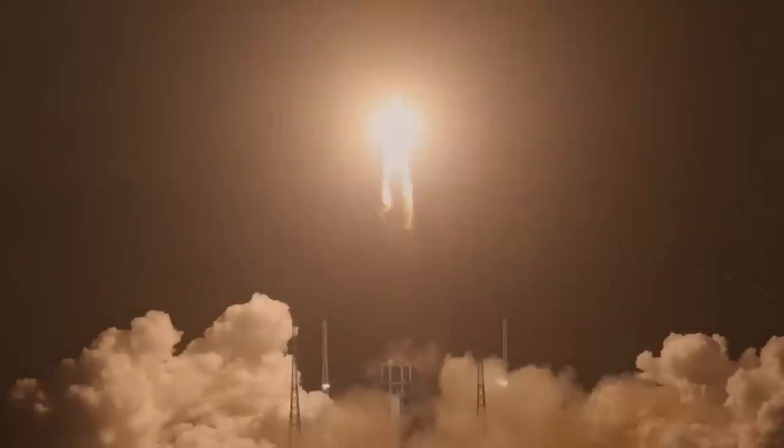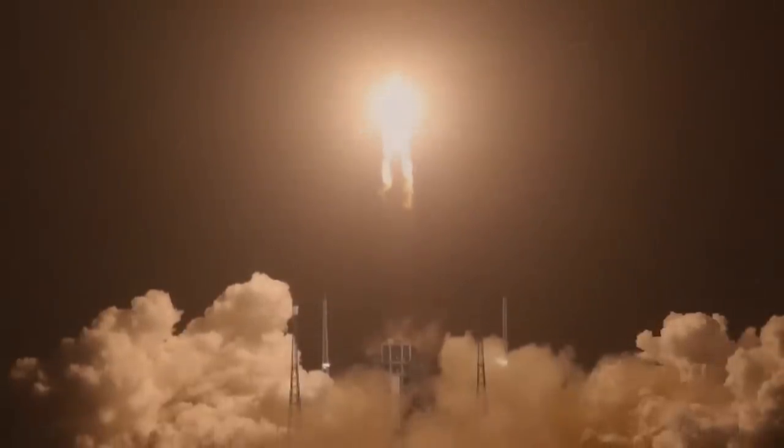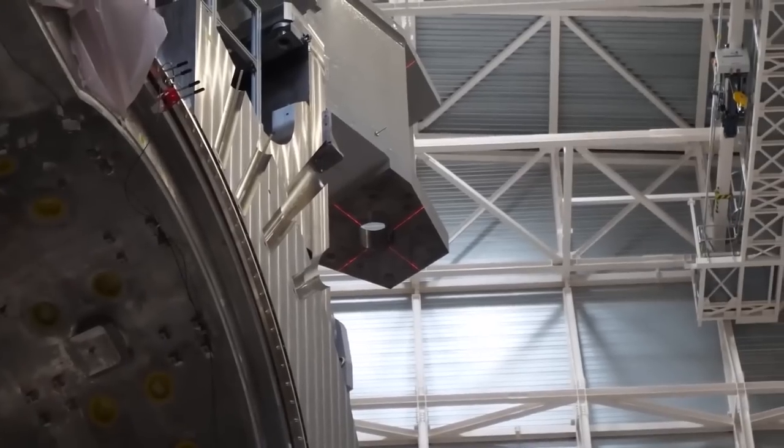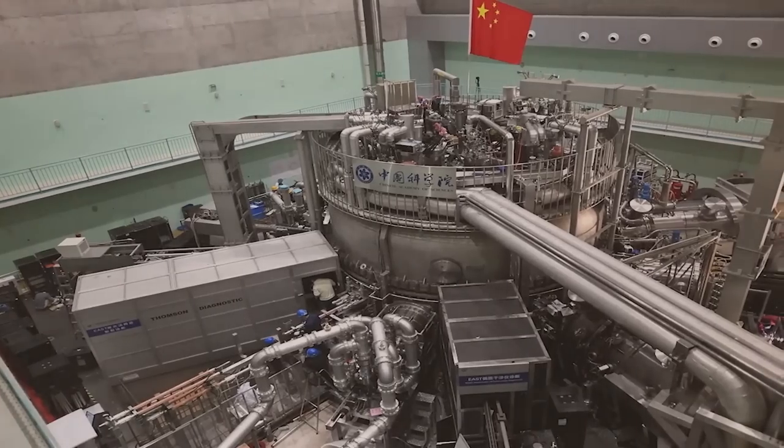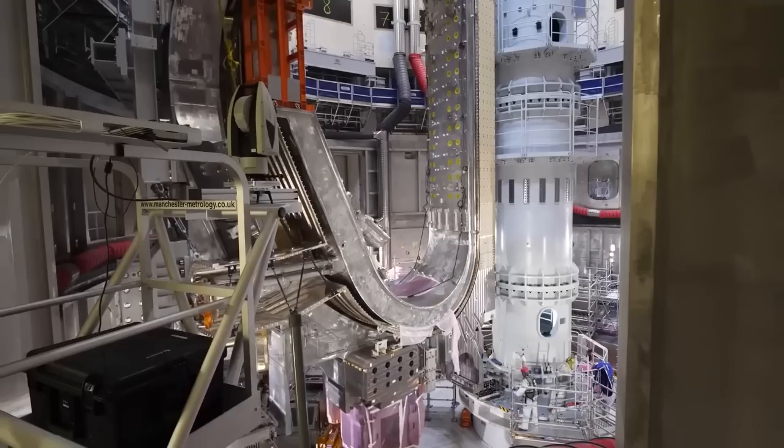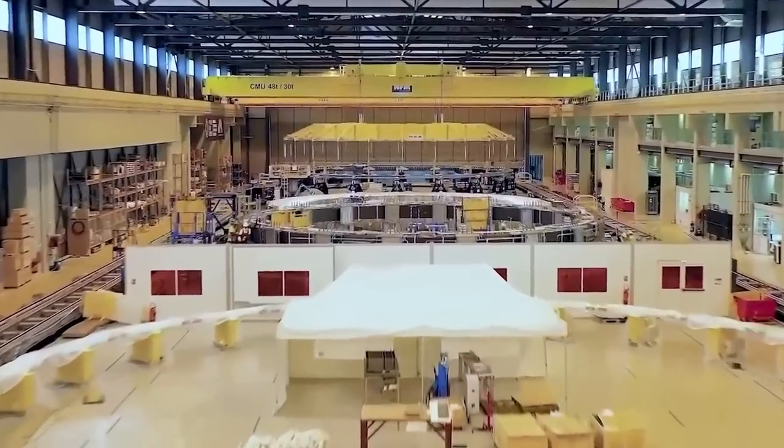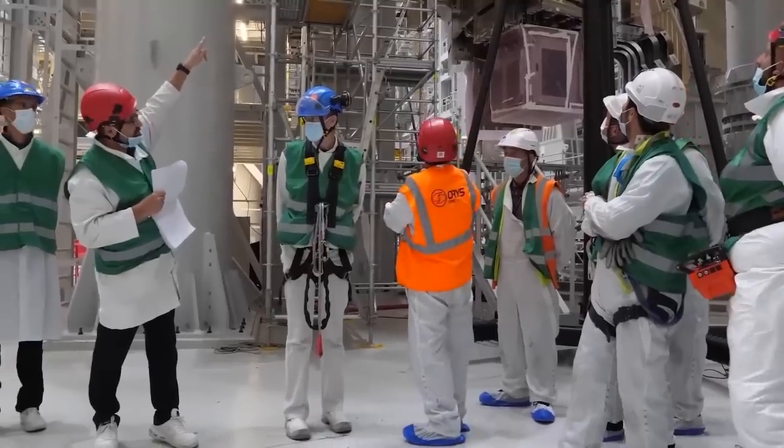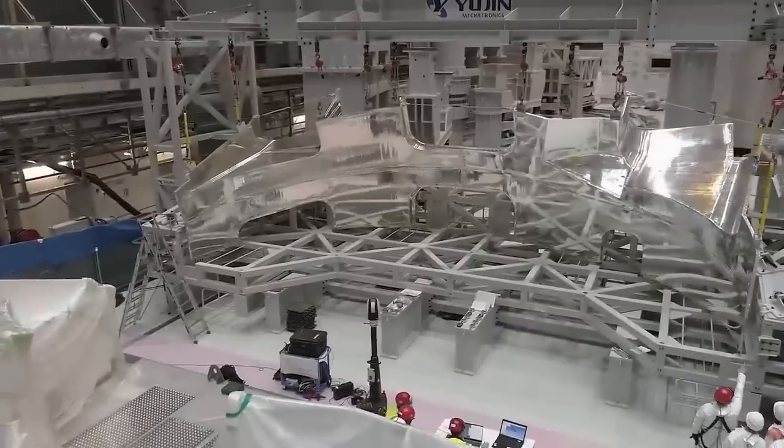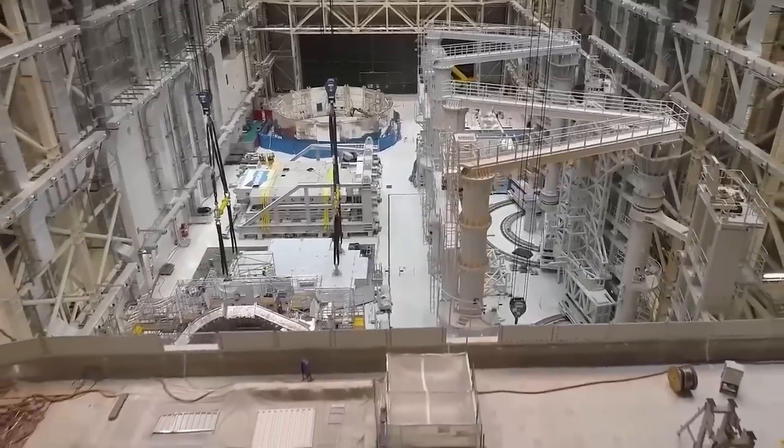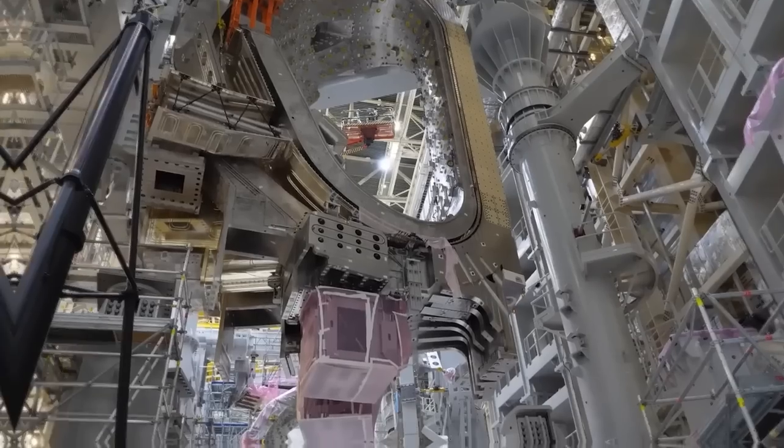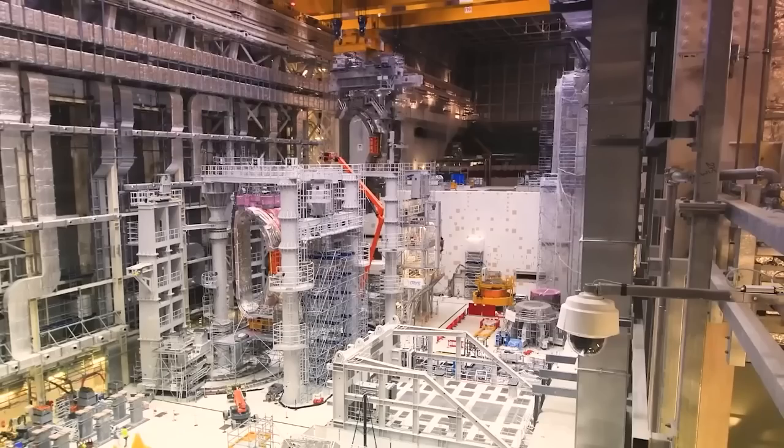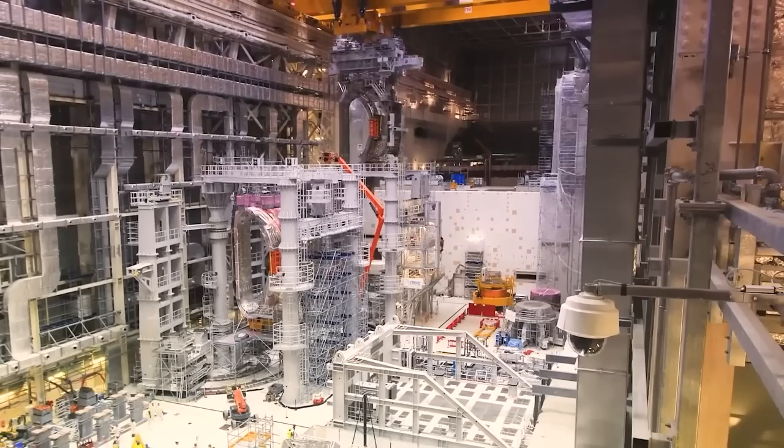The HL-2M tokamak reactor, China's most advanced nuclear fusion experimental research device, uses a strong magnetic field to fuse hot plasma and potentially unlock a more potent clean energy source. The reactor can allegedly reach temperatures of over 150 million degrees Celsius, approximately 10 times hotter than the sun's core. Located in southwestern Sichuan province, it is often referred to as an artificial sun due to its colossal heat and power.